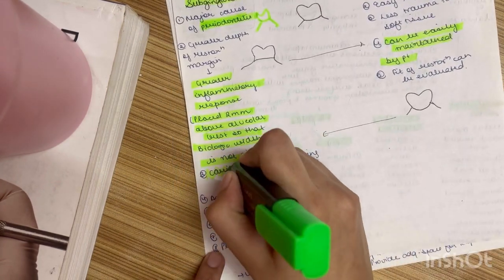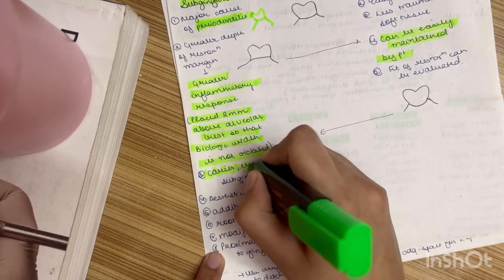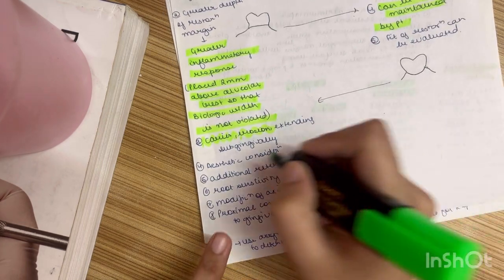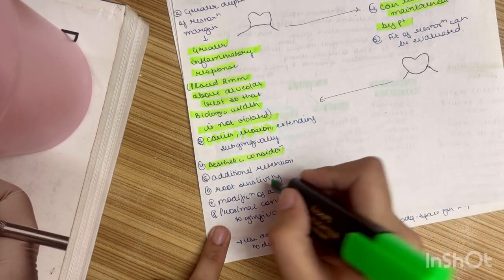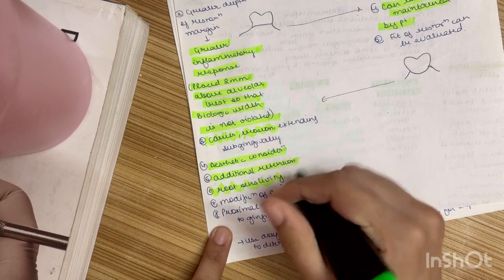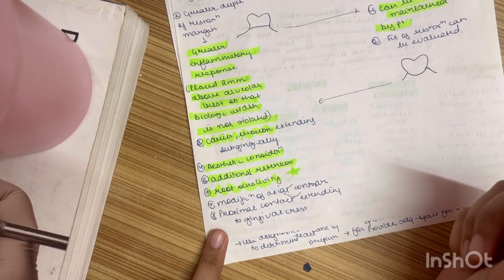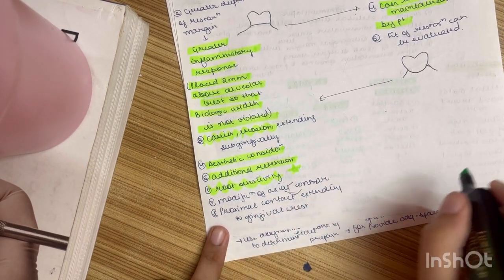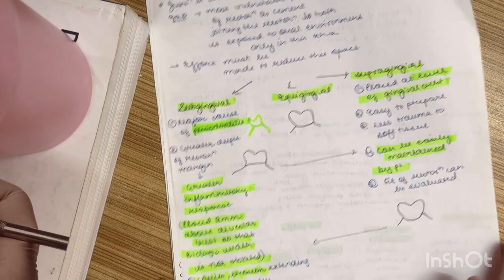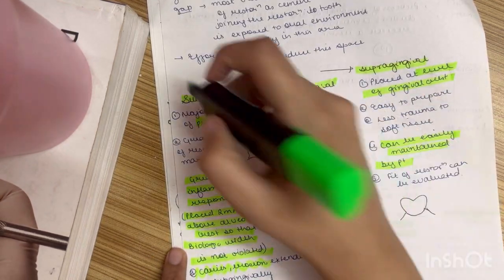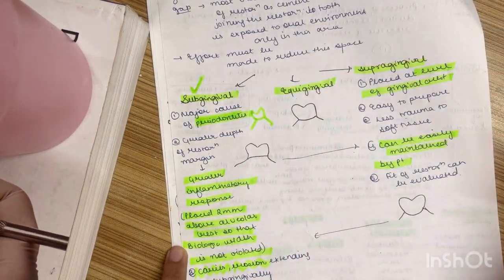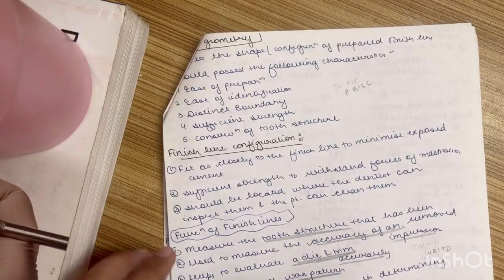Then there is more chance of subgingival caries erosion. Then aesthetic consideration, additional retention, root sensitivity is an important point. Proximal contact extending to the gingival crest. Now out of all these the most aesthetic one is the subgingival. Now coming on to the geometry.